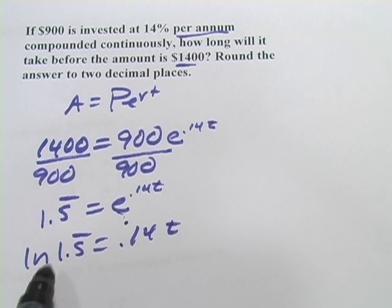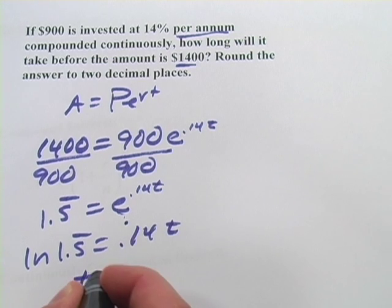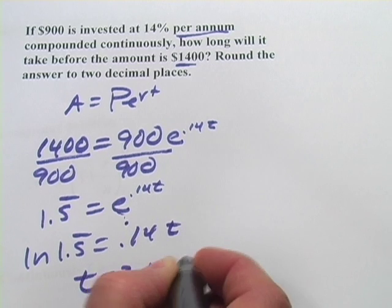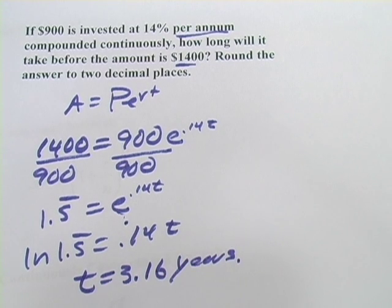And then to solve for T, all we have to do is take natural log of 1.5 repeating and divide by 0.14. And what you get is 3.16 years, approximately. So that's a little bit of work with these exponential functions regarding interest.